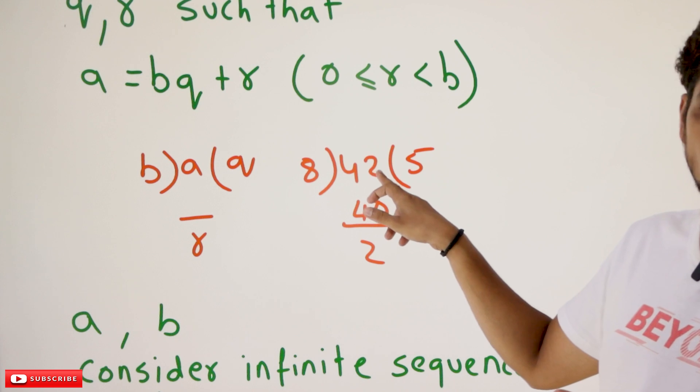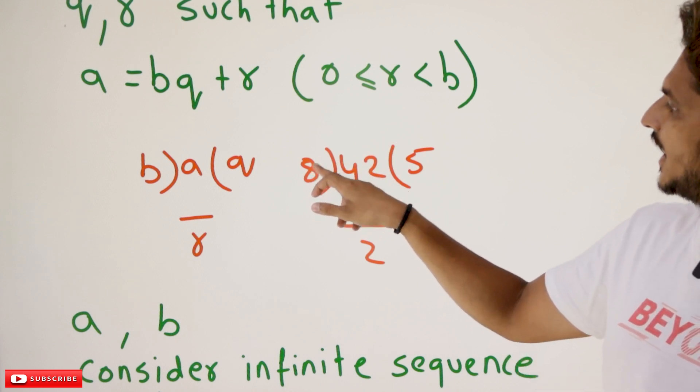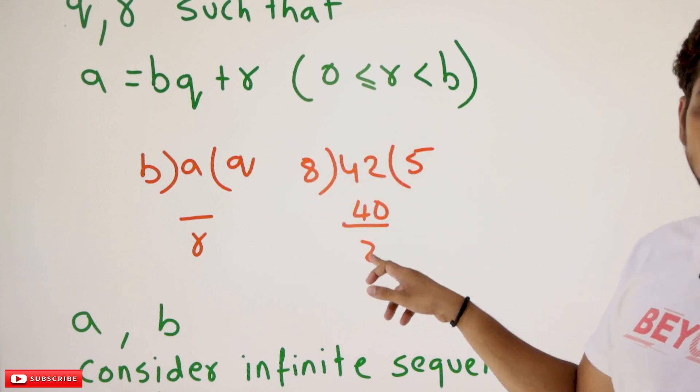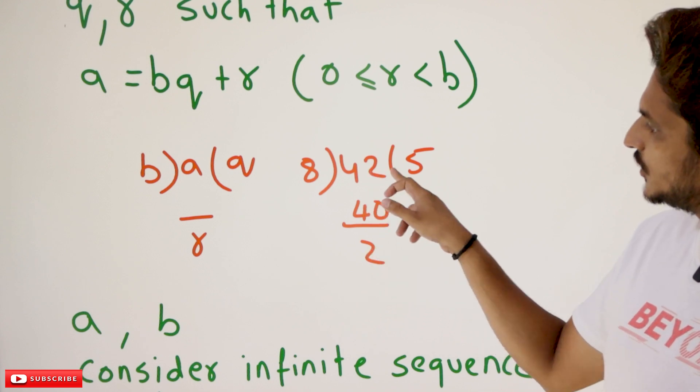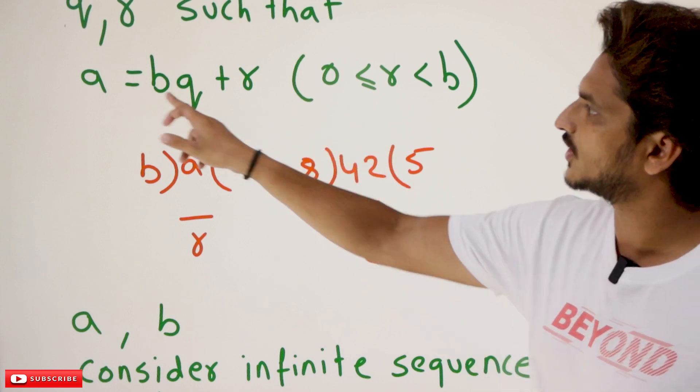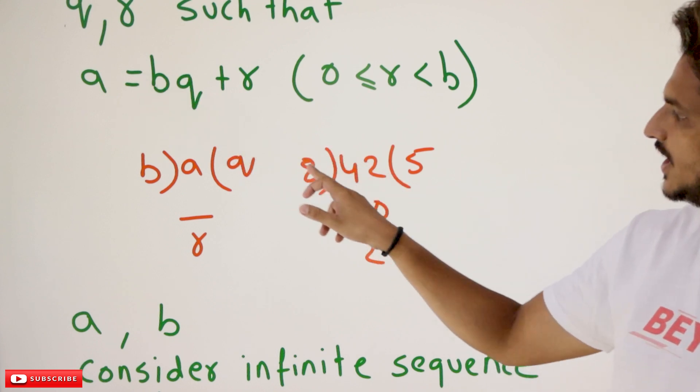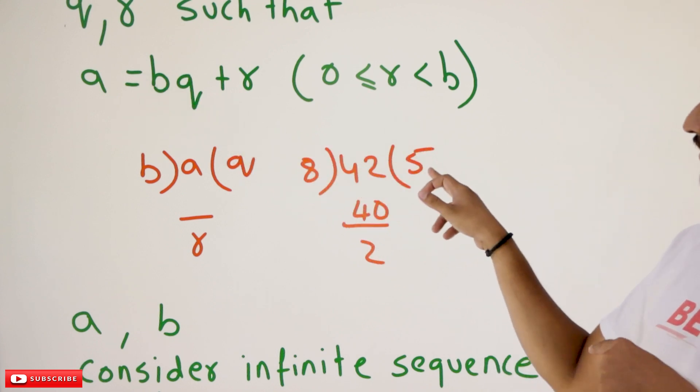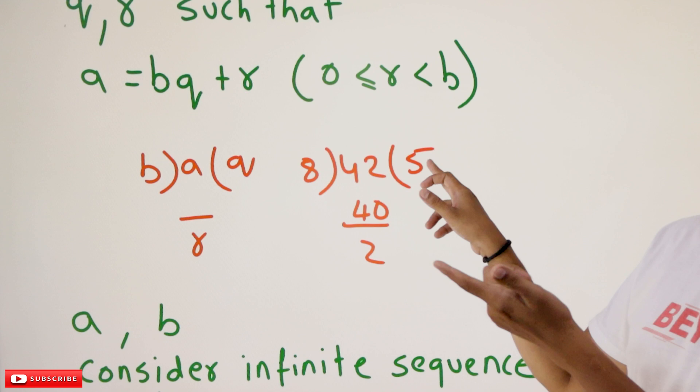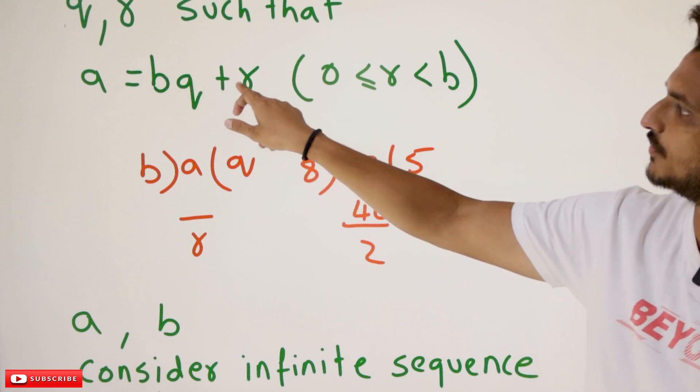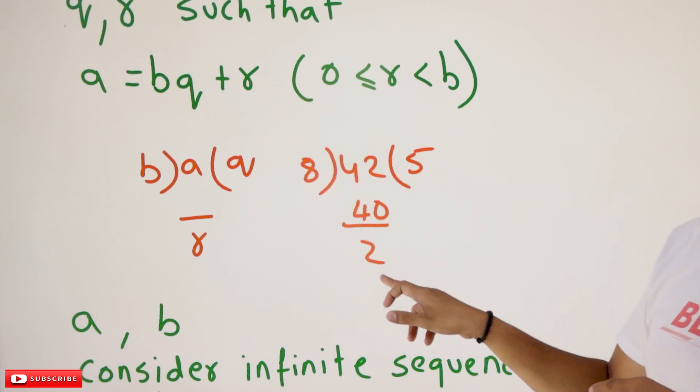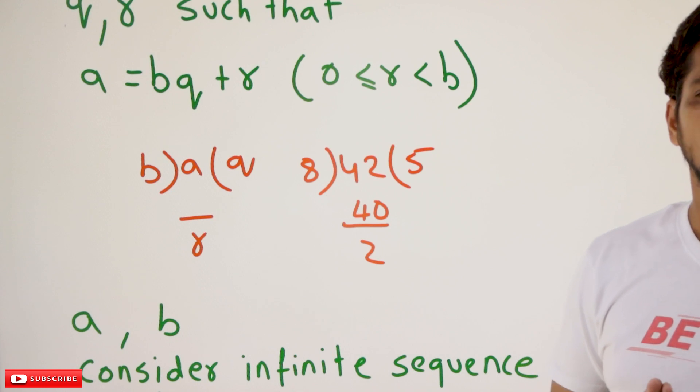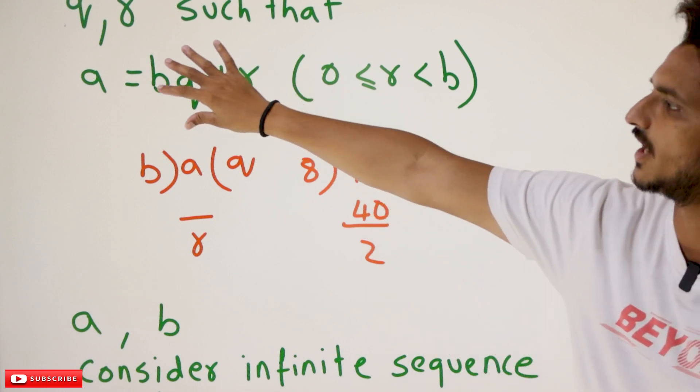See here, assume that A is equal to 42, B is 8. 8 fives 40 and the remainder value is 2. So 42 can be written as A equals 42, which can be written as B is 8, 8 fives, Q is quotient, 8 fives 40 plus R is 2, the remainder value.